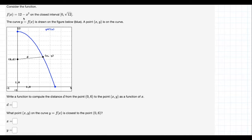Consider the function f of x equals 12 minus x squared on the closed interval 0 to square root of 12. The curve y equals f of x is drawn on the figure below in blue. A point (x, y) is on the curve.